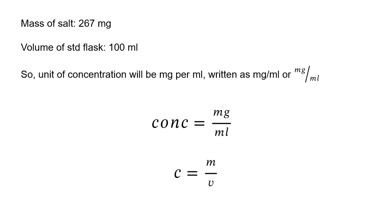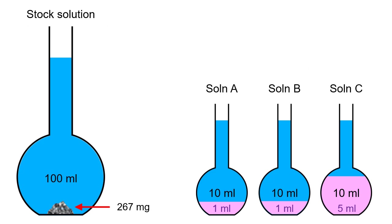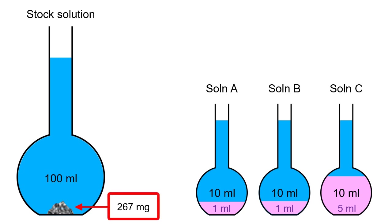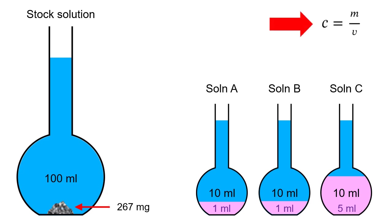To make it easier to reuse this through the rest of the presentation, we'll abbreviate concentration as C, mass as M, and volume as V. Remember that as we go through this serial dilution process, we take an aliquot out of the stock solution to supply the salt for solution A, then we take an aliquot of solution A to provide all the salt for solution B, and finally we take an aliquot of solution B to provide all the salt for solution C. So let's jump back to the beginning of the process. We know the mass of the salt and the volume of the stock flask, so we can calculate the stock concentration using concentration equals mass over volume.